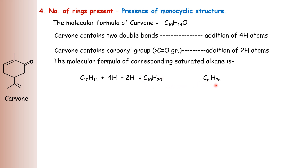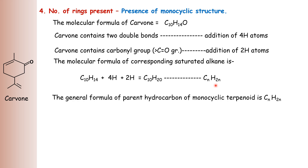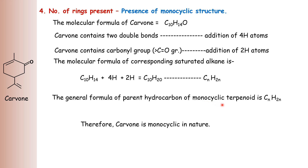The formula of the corresponding saturated alkane is C10H20, which is the general formula of monocyclic terpenoids. Therefore carvone is monocyclic in nature. The general formula C10H20 indicates a monocyclic structure.